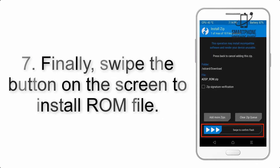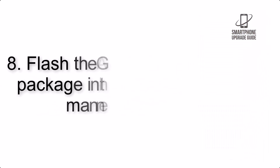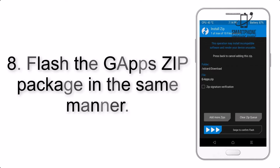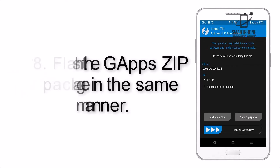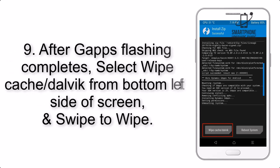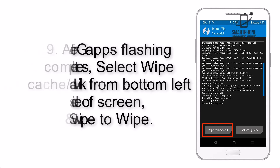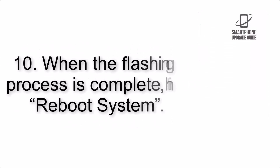Step 6: Navigate to the storage and select the ROM zip file. Step 7: Swipe the button on the screen to install the ROM file. Step 8: Flash the GApps zip package in the same manner. Step 9: After GApps flashing completes, select Wipe Cache and Dalvik from the bottom left side of the screen and swipe to wipe.